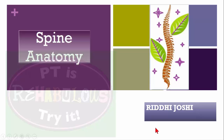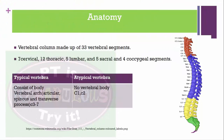Hi friends, this is Riddhi Joshi and today I am going to talk about spine anatomy. The vertebral column is made up of 33 vertebral segments: 7 cervical, 12 thoracic, 5 lumbar, 5 sacral, and 4 coccygeal vertebral segments.